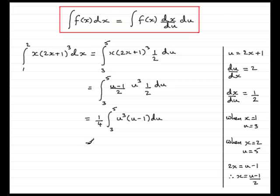And to do this integral, all we've got to do is expand the bracket. So expanding the bracket gives u to the 4 minus u cubed. Put that back in brackets, though, because there's a couple of terms there with respect to u.